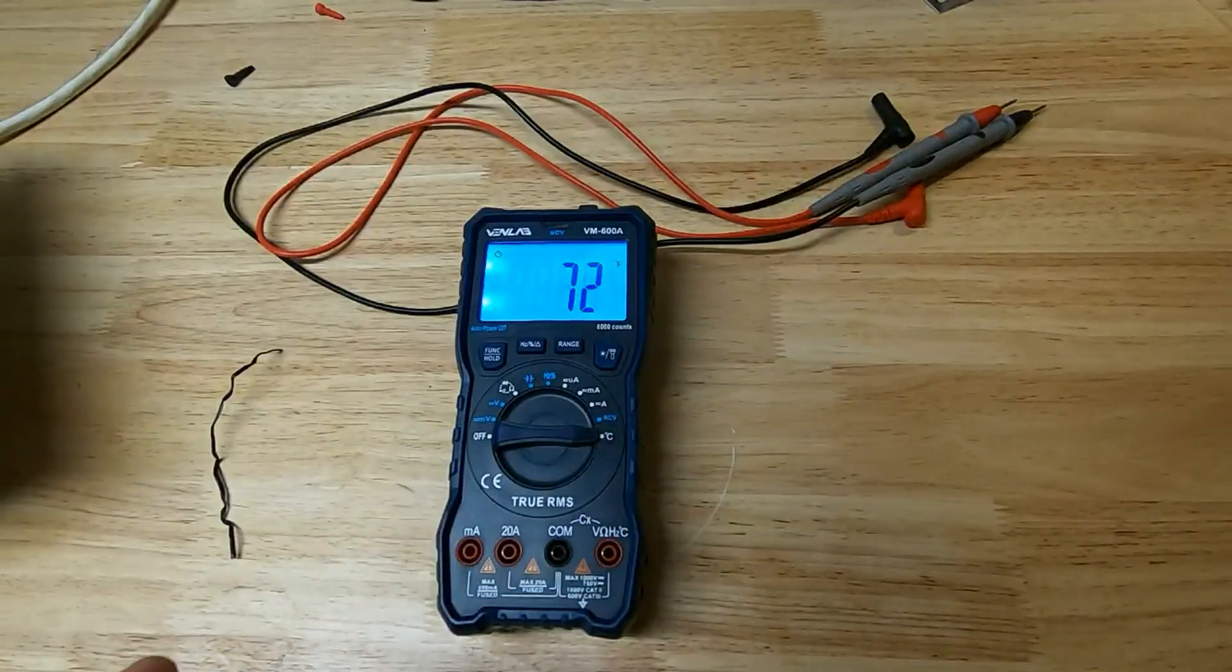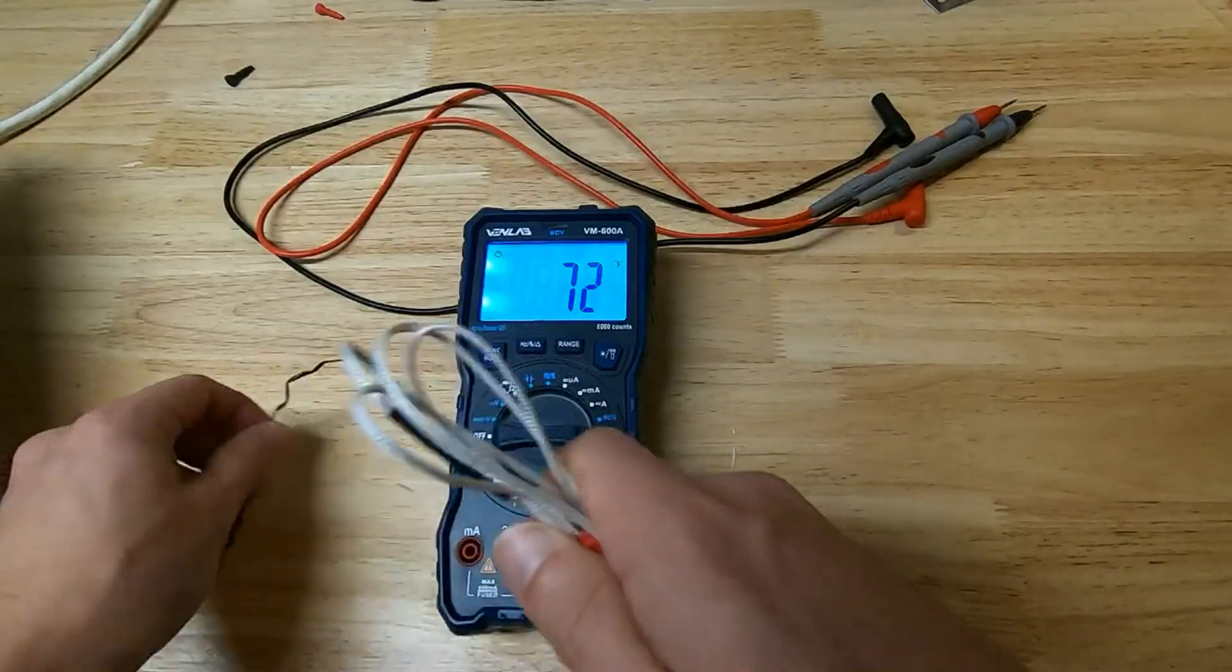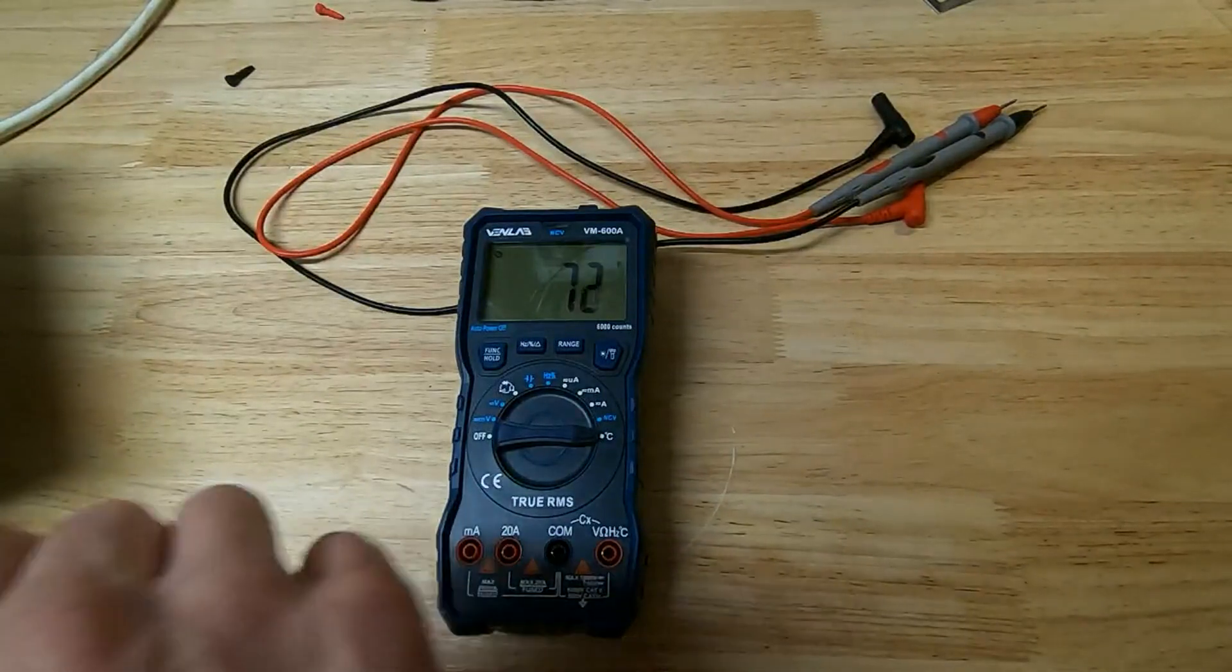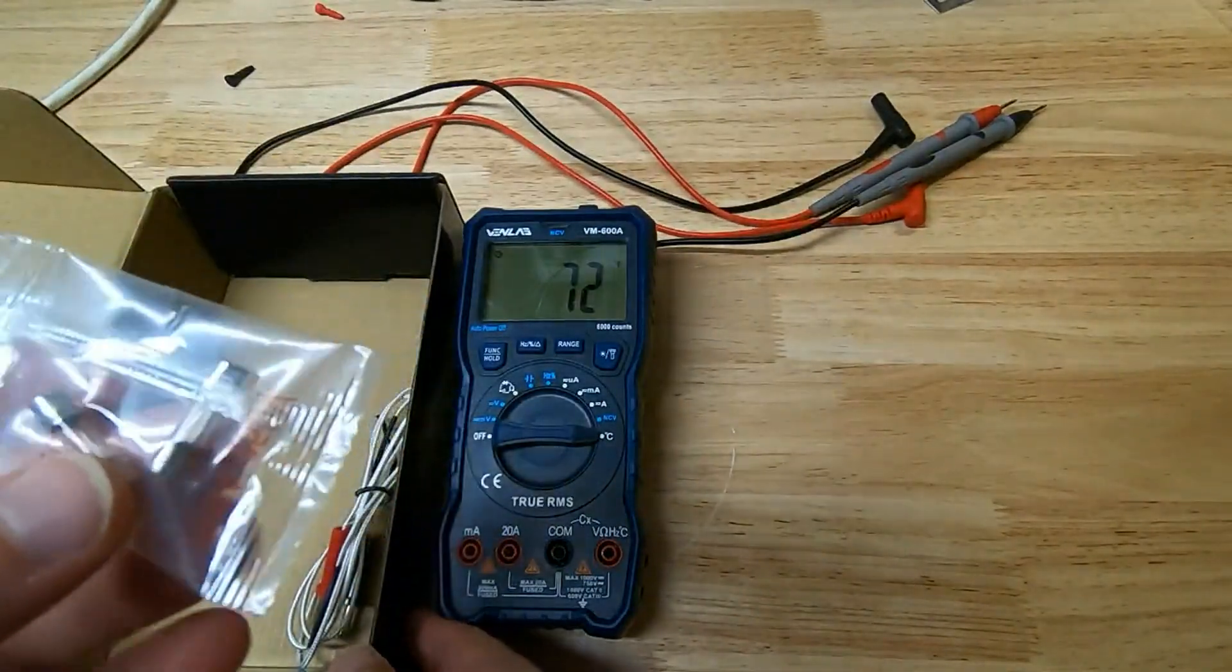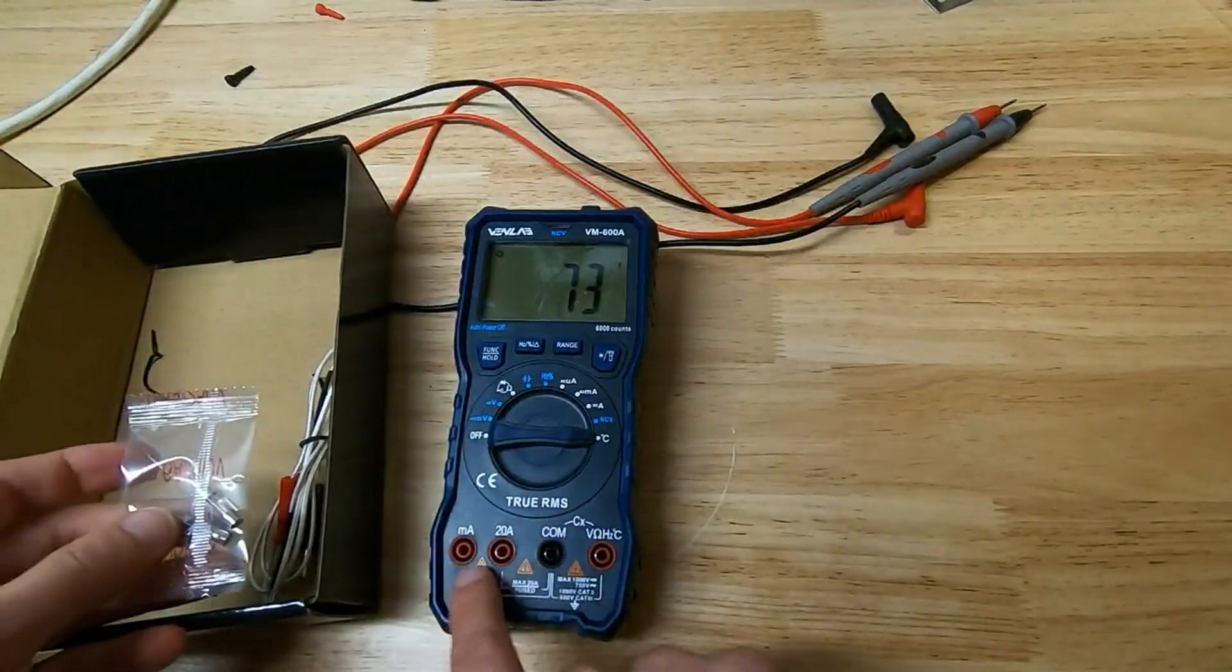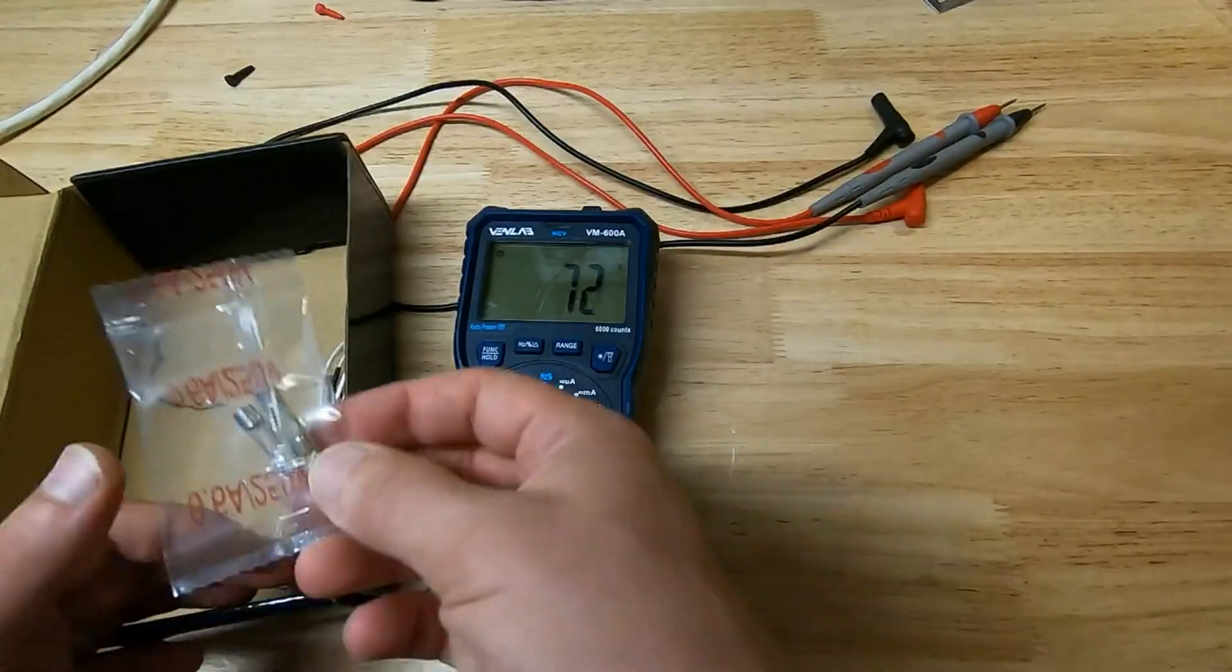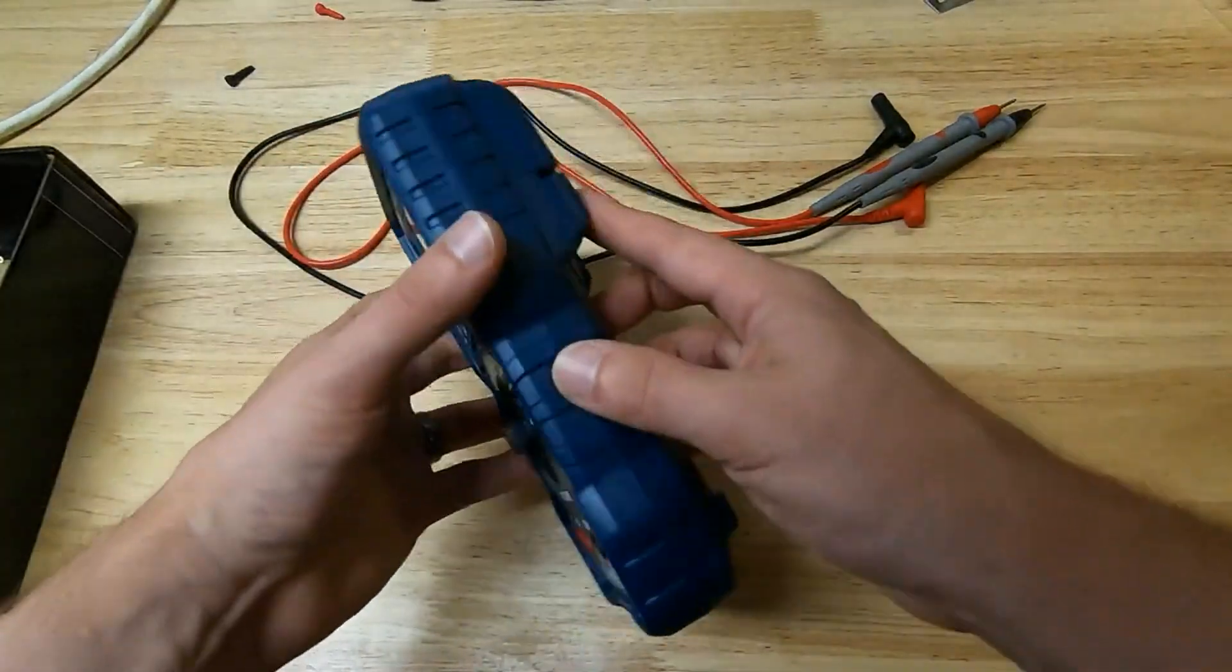Apparently there's a built-in sensor of some sort. It seems to be getting a reading. You can also test continuity and resistance. They include a couple of extra fuses in the box here. If you overload one of these slots when you're reading AC or DC current, then you'd blow a little fuse inside. But they actually give you a couple of spares, which is very much appreciated.